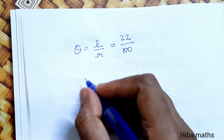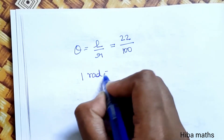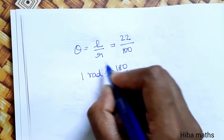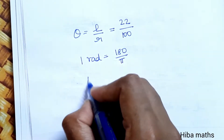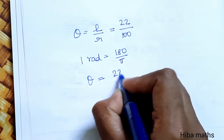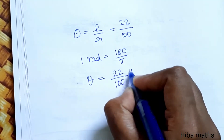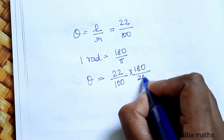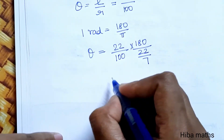We know the value of 1 radian is 180 by pi. Therefore, theta is equal to 22 by 100 multiplied by 180 by pi.